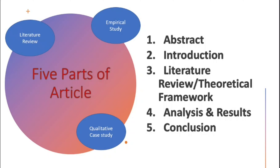The five parts are: number one, abstract; number two, introduction; number three, literature review, or theoretical framework; number four, analysis and results; and number five, conclusion. We will go step by step and discuss each part of the articles by taking examples of two important articles published in renowned journals. We will see what information is available in each section and how you have to read it.